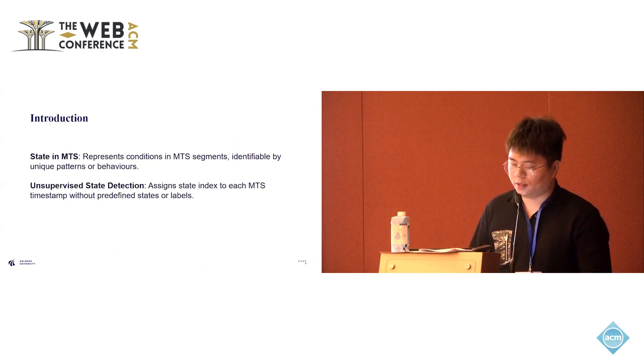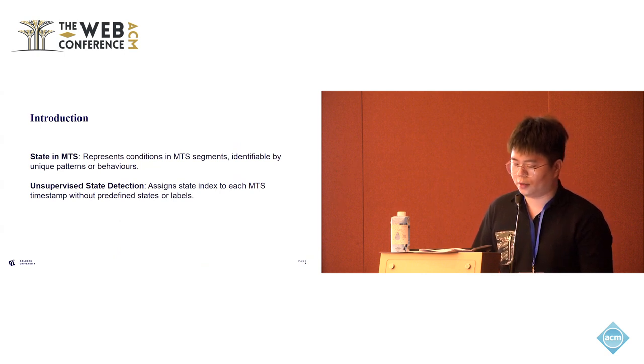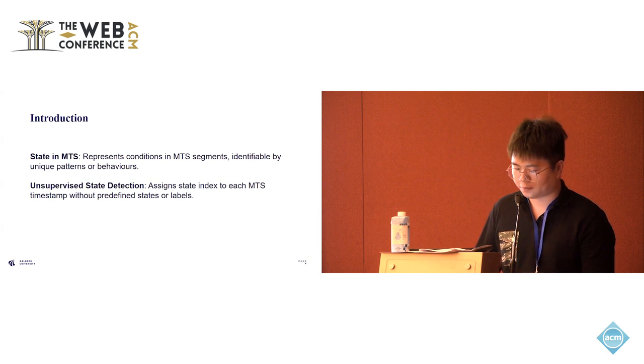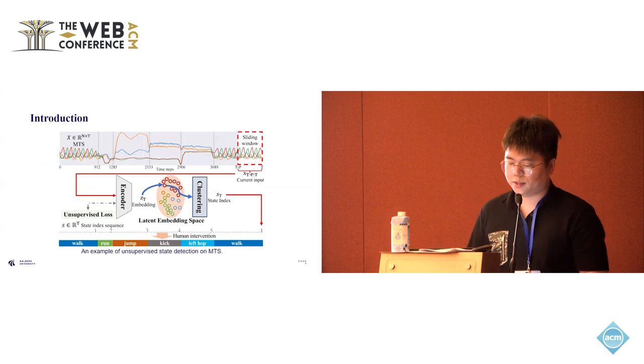Specifically, states in MTS represent the condition in MTS segments and are identifiable by unique patterns or behaviors. Unsupervised state detection assigns state indices to each timestamp without predefined states or labels. In general, deep learning-based unsupervised state detection uses a sliding window approach. This means that the USD model processes segments of the time series one window at a time as it moves along the time dimension.